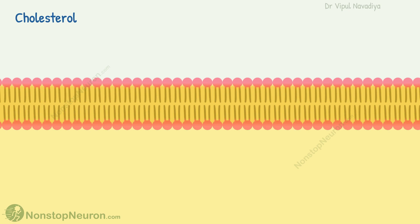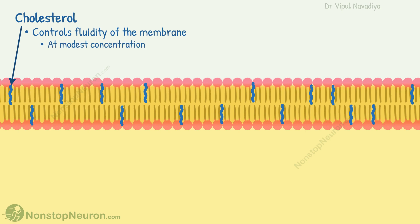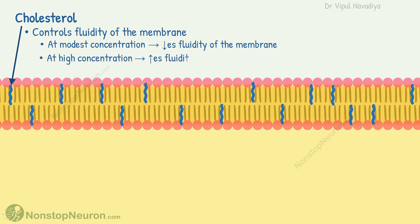Now let's continue with the next lipid: cholesterol. Cholesterol molecules are dissolved in the lipid bilayer. It controls the fluidity of the membrane. At a modest concentration, it decreases the fluidity — in simple words, it makes the membrane more rigid. And at high concentrations, it increases the fluidity of the membrane. So these were the lipids.